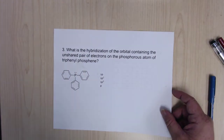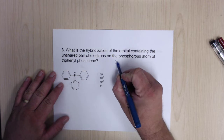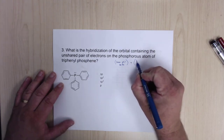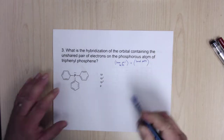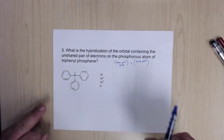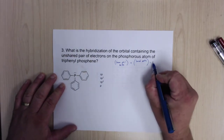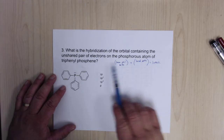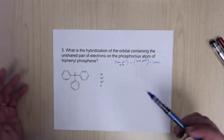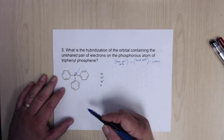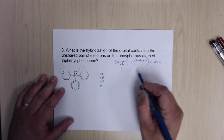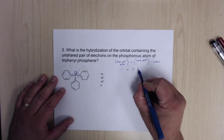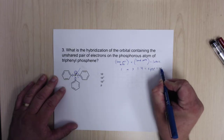For hybridization, what I typically do is count lone pair sets plus bond sets. A single bond, a double bond, and a triple bond are all going to be one set. That total tells you how many letters you need for your hybridization. For this question — which asks what is the hybridization of the orbital containing the unpaired electrons — it's really just asking what's the hybridization of that phosphorus. There is one lone pair set and three bond sets, so we need four letters: SPPP, which is SP3.